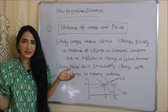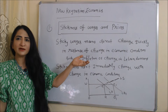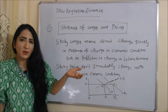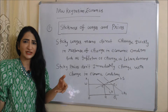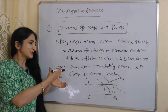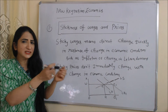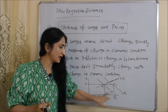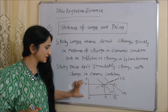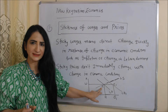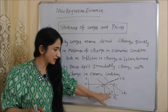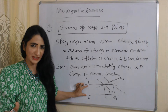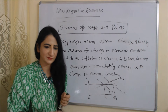The first thing explained by new Keynesian economics is the stickiness of wages and prices. Sticky wages do not change quickly in response to changes in economic conditions like inflation or labor demand. Similarly, sticky prices do not immediately change with changing economic conditions. In this diagram, LS is the labor supply curve and LD is the labor demand curve. Initially the wage rate is OW and the equilibrium point is E. As labor demand increases from LD to LD1, wages should increase, but here the wage rate remains constant — these are called sticky wages.